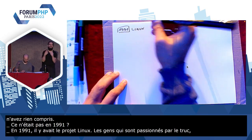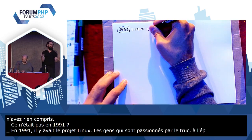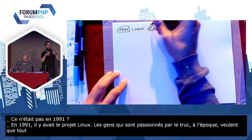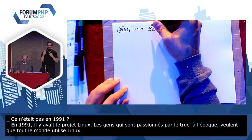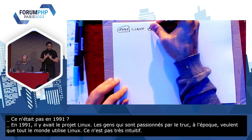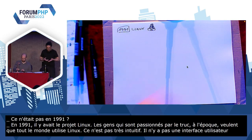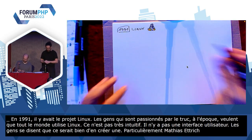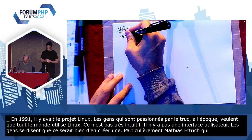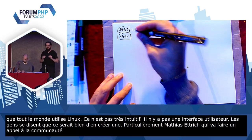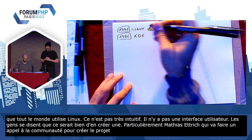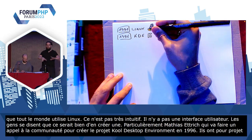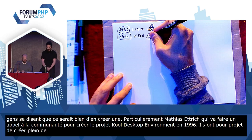Et donc, ils se rendent bien compte, ces passionnés, qu'ils ont envie que tout le monde utilise Linux. Et le problème, c'est pas super intuitif. Il y a plein d'applications qui sont développées par plein de gens différents, donc il n'y a pas une interface utilisateur unifiée. Et donc, il y a des gens qui se disent que ça serait bien d'en créer une. Et particulièrement Matthias Ettrich qui, le 14 octobre 1996, va faire un appel à la communauté pour créer le projet KDE — K Desktop Environment. Ils ont pour projet de créer plein de logiciels sur des bases communes, notamment la librairie Qt.